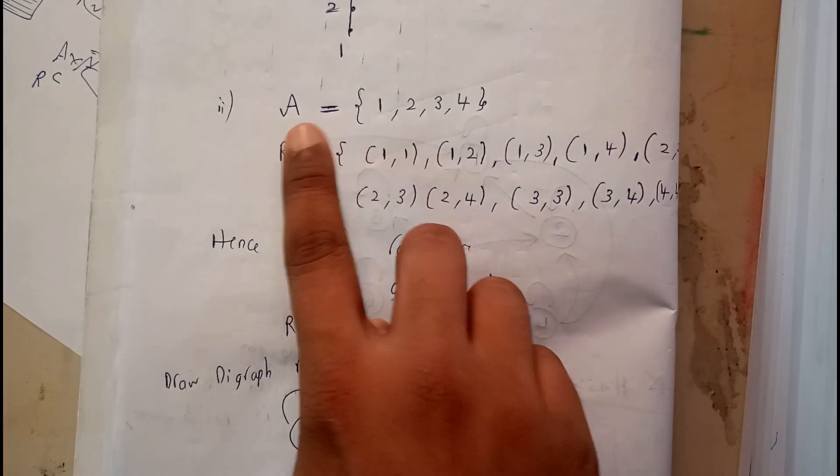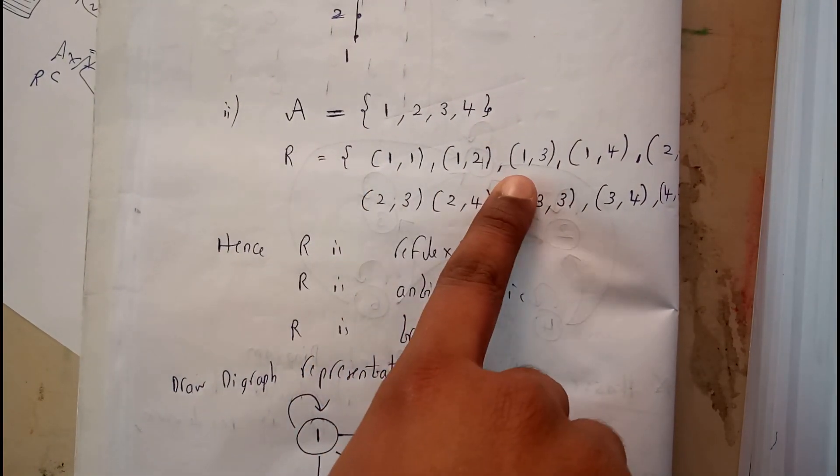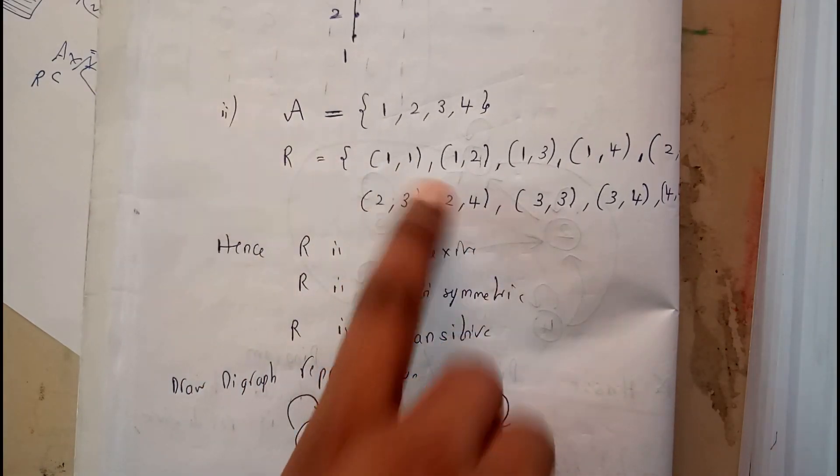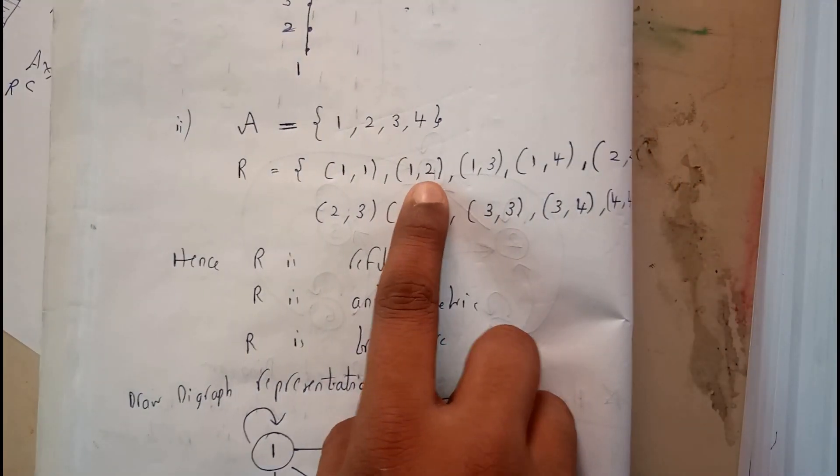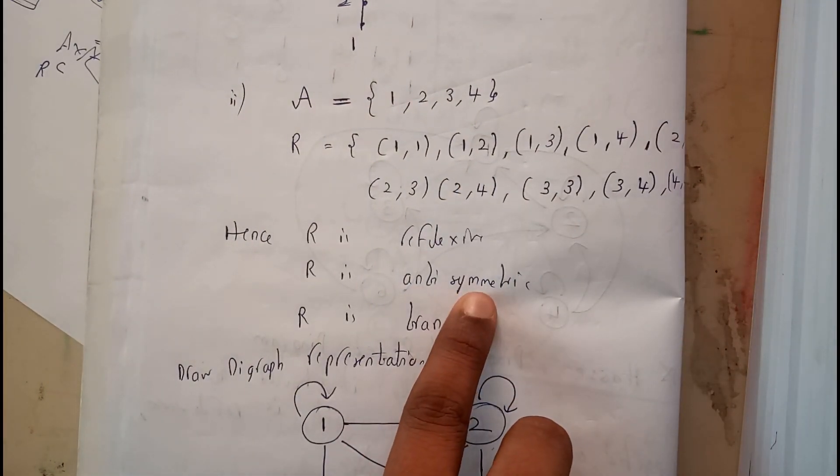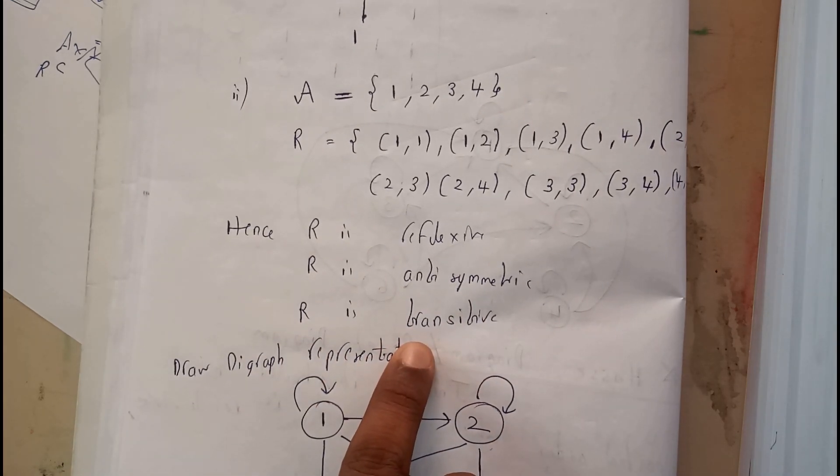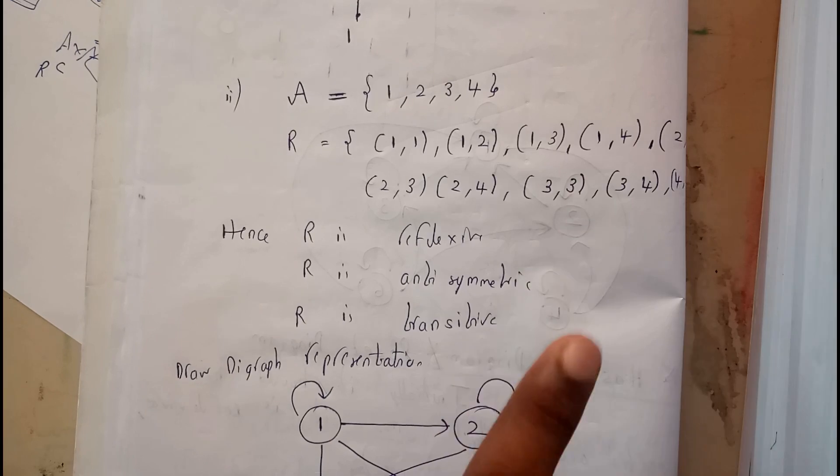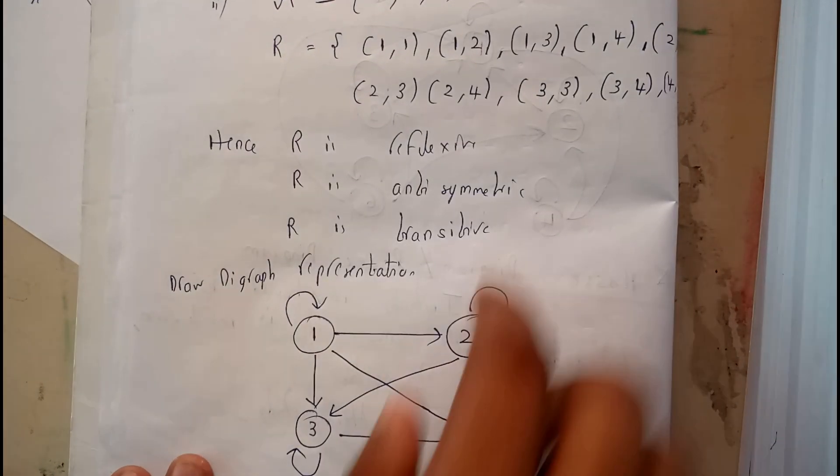Assume that he has given A equals 1, 2, 3, 4 and he gave R equals 1,1, 1,2, 1,3. He gave something like this. So R has reflexive property, anti-symmetric. There is no 2,1, so it is anti-symmetric. Then transitive. We will also be checking the transitive. Transitive means nothing but a,b, b,c, then a,c also should exist. 1,1 and 1,2, 1,2 exist. There are all possibilities. Let us draw the graph for these relations.